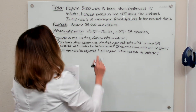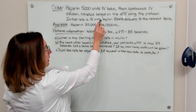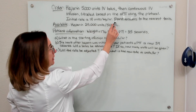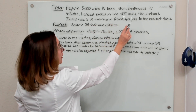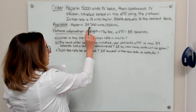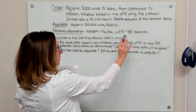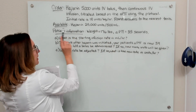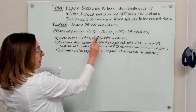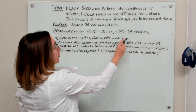In this problem, we have an order for heparin 5,000 units IV bolus to be administered, and then a continuous IV infusion that should be titrated based on the patient's APTT level using the protocol. Our initial infusion rate is 18 units per kilogram per hour, and we need to round all answers to the nearest tenth. What we have available is heparin 25,000 units in 500 ml, and our patient weighs 176 pounds and has an initial APTT level of 35 seconds.